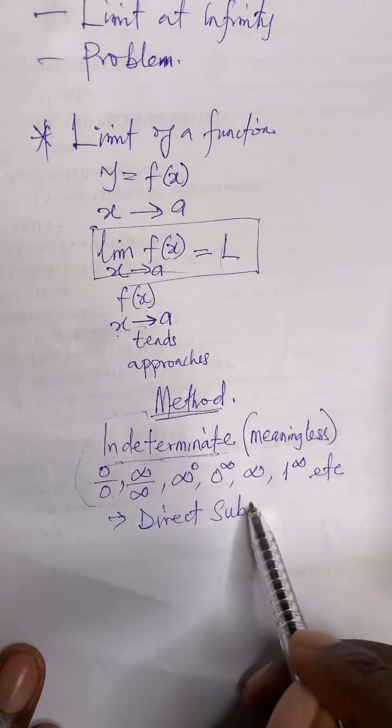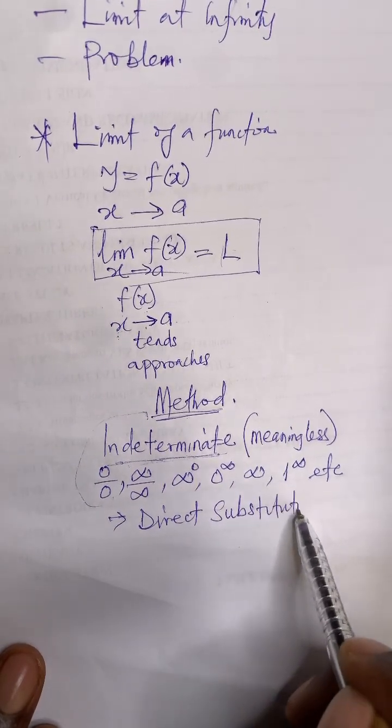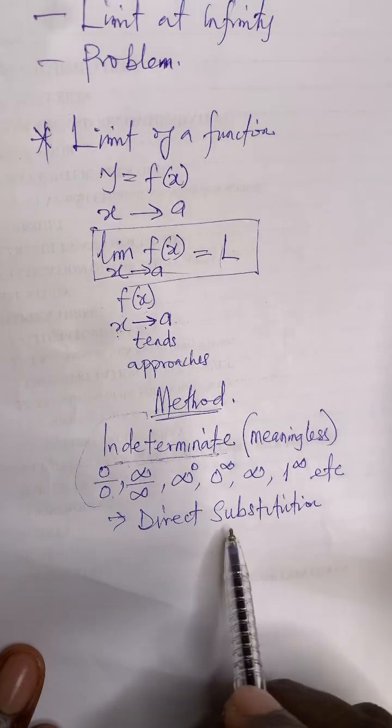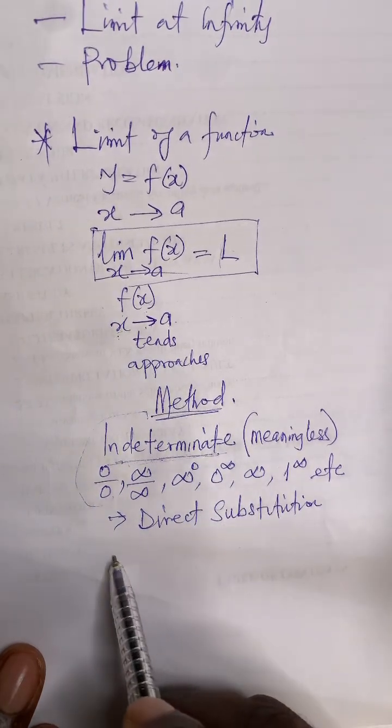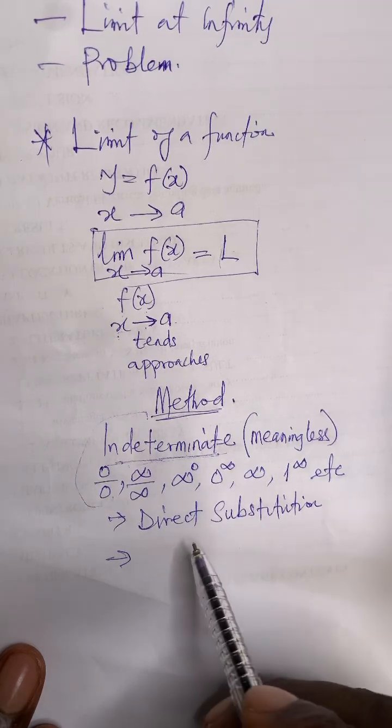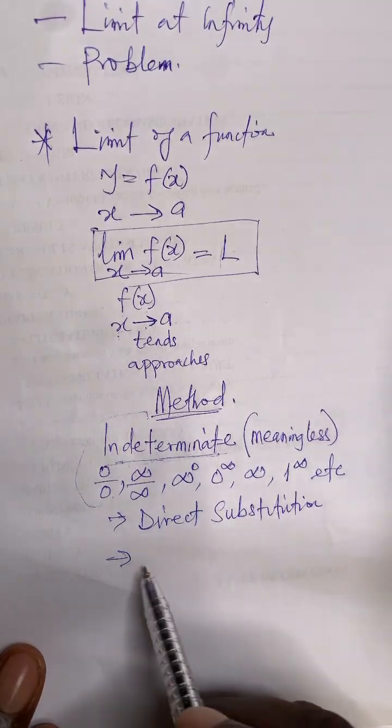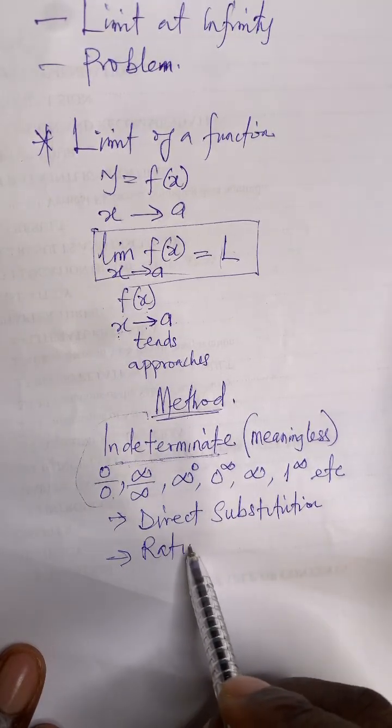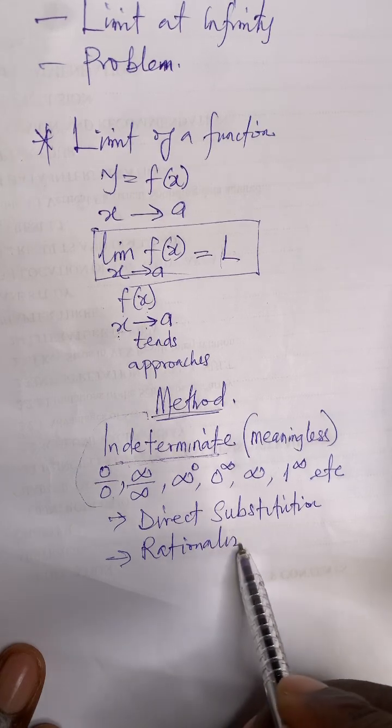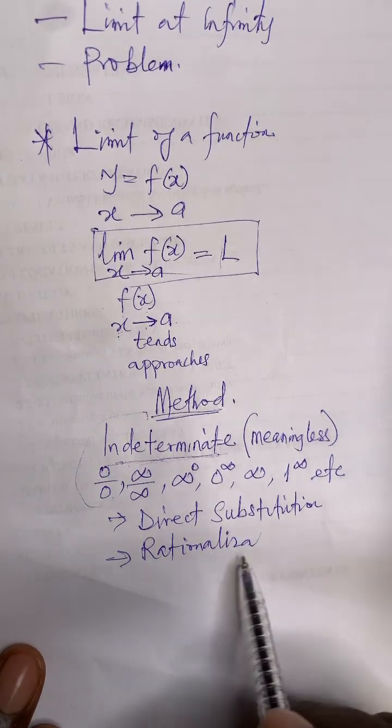If direct substitution gives you indeterminate, it means there are other options. Everything, you can do, you go either simplify the method by rationalization. Depending on the form, you go use rationalization method.